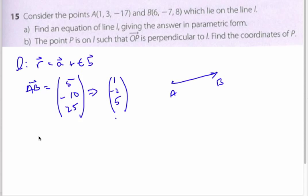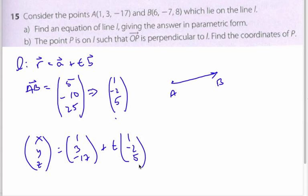So here's my direction vector. So my equation of my line, XYZ, I can take either point to be my starting point. Let's say 1, 3, negative 17, plus T, 1, negative 2, 5. This is the equation of the line.